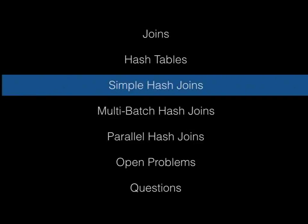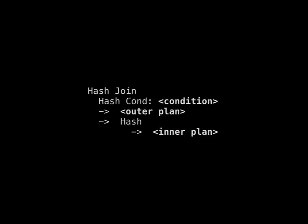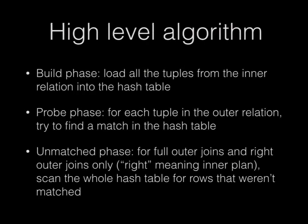Moving on to straightforward, simple hash joins: when you use EXPLAIN on a hash join, you see the outer plan and the inner plan — the inner plan is the one that's hashed, usually the smaller of the two because we want it to fit in memory. At a high level, the algorithm has at least two phases. For an inner join there's the build phase, where you load all tuples from the inner relation into the hash table, and then the probe phase, where you scan the outer relation trying to find matches. If it's an outer join, you also need a third phase to scan through the hash table looking for unmatched rows.